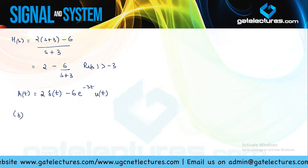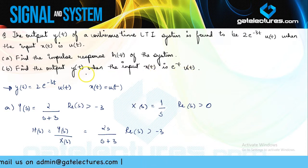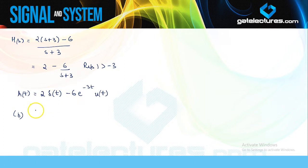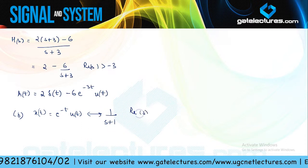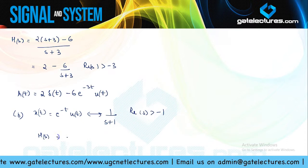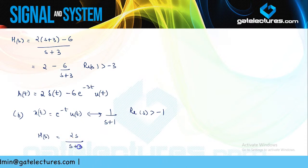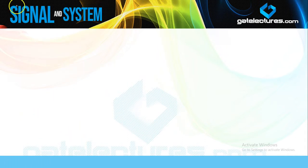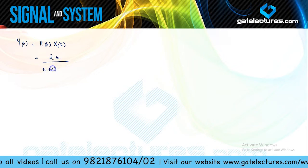Now look at the second part of the same question. They say the input is changed to e^(-t)u(t) and ask you to calculate the output y(t). We convert x(t) = e^(-t)u(t) into the Laplace domain to obtain 1/(s+1) with ROC Re(s) > -1. We already calculated H(s) = 2s/(s+3). The output Y(s) = H(s)*X(s) = 2s / [(s+1)(s+3)].